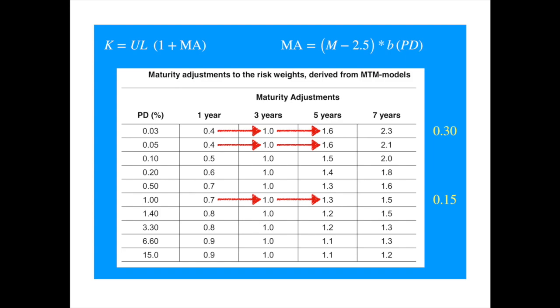And for higher probability of default of 15%, again, the slope from 1 to 3 years and from 3 to 5 years are the same. But the value of the slope is smaller, 0.1 per 2 years or 0.05 per year. So we observe that the slope declines with the probability of default, which is why we have B as a function of the probability of default in the Basel formula.